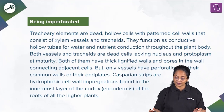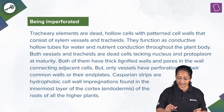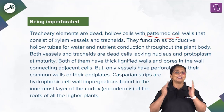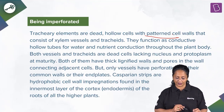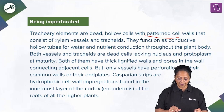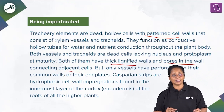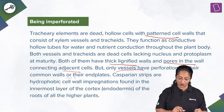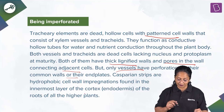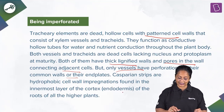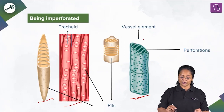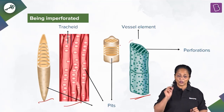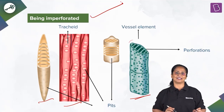Tracheary elements are dead hollow cells with patterned cell walls — the deposition of lignin on them takes beautiful patterns — consisting of xylem vessels and tracheids. Both vessels and tracheids are dead cells lacking nucleus and protoplasm at maturity, with thick lignified walls and pores connecting adjacent cells. But only vessels have perforations in the common walls or end plates. Casparian strips are hydrophobic cell wall impregnations found in the endodermis of roots. The right answer: tracheids differ from other tracheary elements in being imperforated.